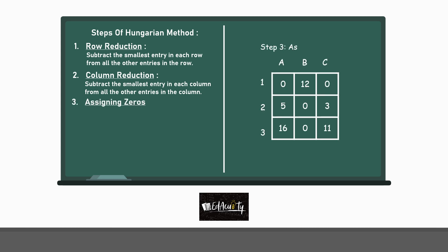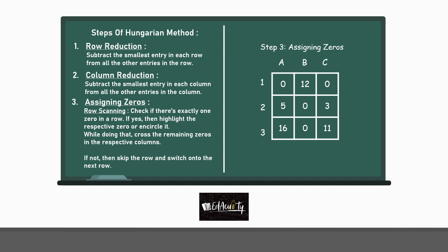Step 3 is assigning 0s. Row scanning. Check if there is exactly one 0 in a row. If yes, then highlight the respective 0 or encircle it. While doing that, cross the remaining 0s in the respective columns. If not, then skip the row and switch on to the next row. In the matrix on the right-hand side, see that row 1 has two 0s. So, we'll skip that row and switch on to row 2. Since it has only one 0, highlight it or encircle it. And with that, cross the remaining 0 in the respective column, i.e. column B.